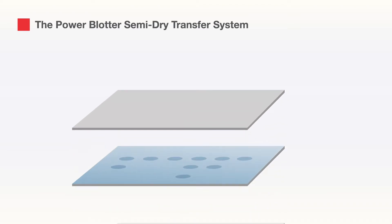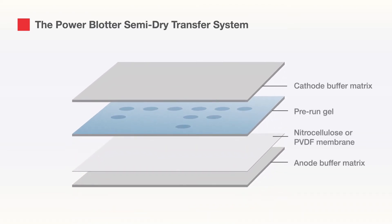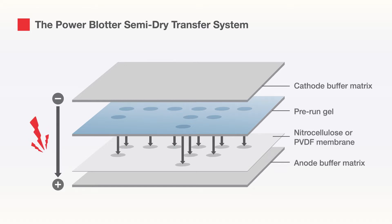Invitrogen Power Blotter Select Transfer Stacks utilize a special application of the unique gel matrix technology developed for the Invitrogen iBlot 2 transfer stacks. Each stack contains the appropriate cathode and anode buffers in gel matrices, so there is no need to prepare transfer buffer. They also incorporate either PVDF or nitrocellulose membranes.